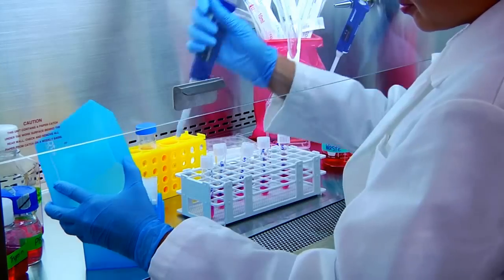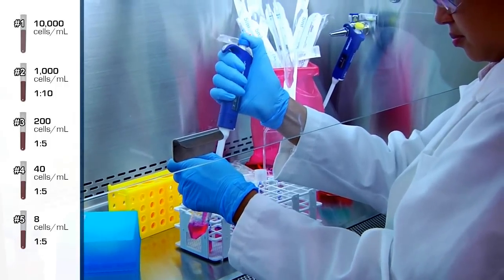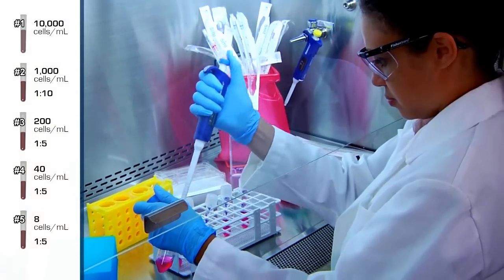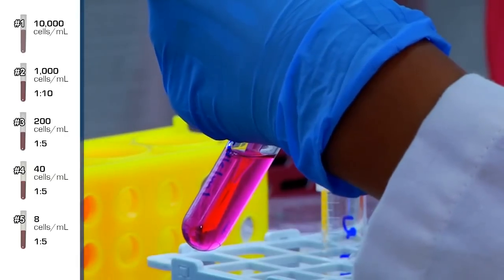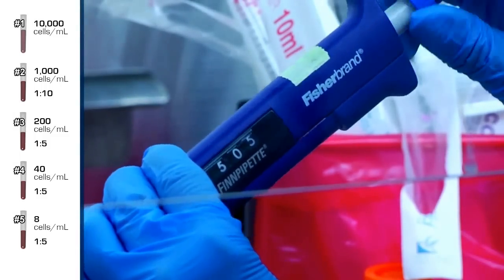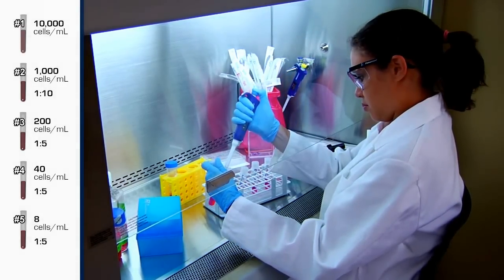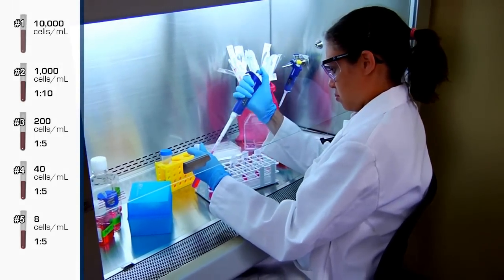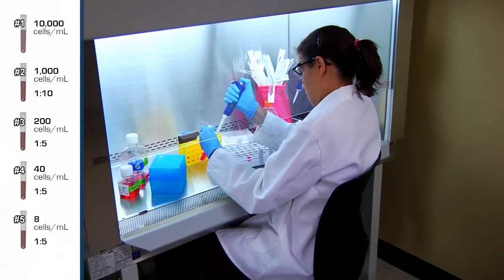Using the previous calculation again, transfer enough cells to tube number 1 so that the final concentration is 10,000 cells per milliliter. As you perform each dilution, be sure to mix the cells repeatedly by pipetting up and down several times. This will help to keep the diluted cells uniformly suspended in the medium. Tube number 1 contains 10,000 cells per milliliter. Remove 0.5 milliliters from tube number 1 and transfer it to tube number 2 for a 1 to 10 dilution. The concentration of tube number 2 is now 1,000 cells per milliliter.